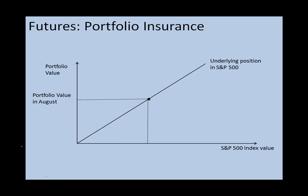This diagram highlights the conundrum faced by the portfolio manager. Currently, the portfolio value in August is relatively high, and the manager is concerned that by the end of the year the portfolio value is going to decrease. Can we use a futures contract to eliminate this risk? We could. We want to agree a price to sell the S&P 500 at in December. Since we want to sell the underlying asset in the future, we want to be short a futures contract in the S&P 500 with an expiration date in December.